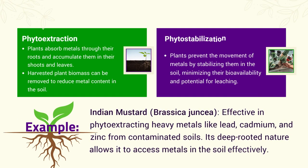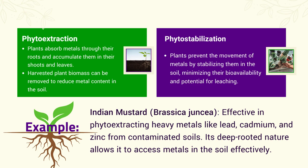Phytoextraction involves plants absorbing metals via their roots and accumulating them within their shoots and leaves. Once the plants have absorbed these metals, the harvested biomass can be efficiently removed, serving as an effective method to decrease the metal content in the soil.